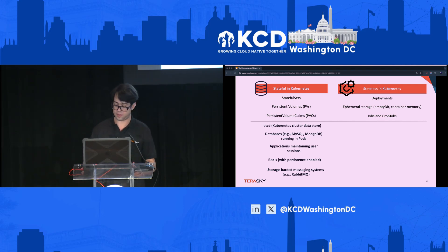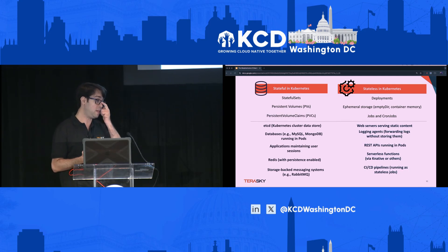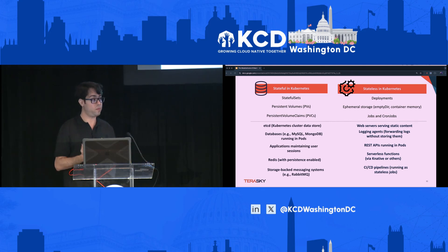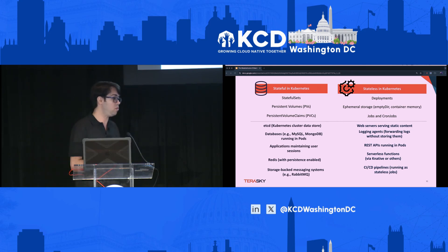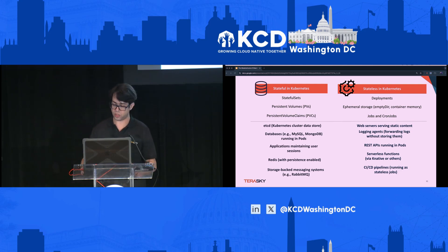But what about the stateless workloads? Dave understands that he has CI/CD pipelines running in his Kubernetes cluster — many companies today run Jenkins workloads in Kubernetes. He also has web servers and static content running on Kubernetes. He thinks these could be set aside from the disaster recovery strategy.